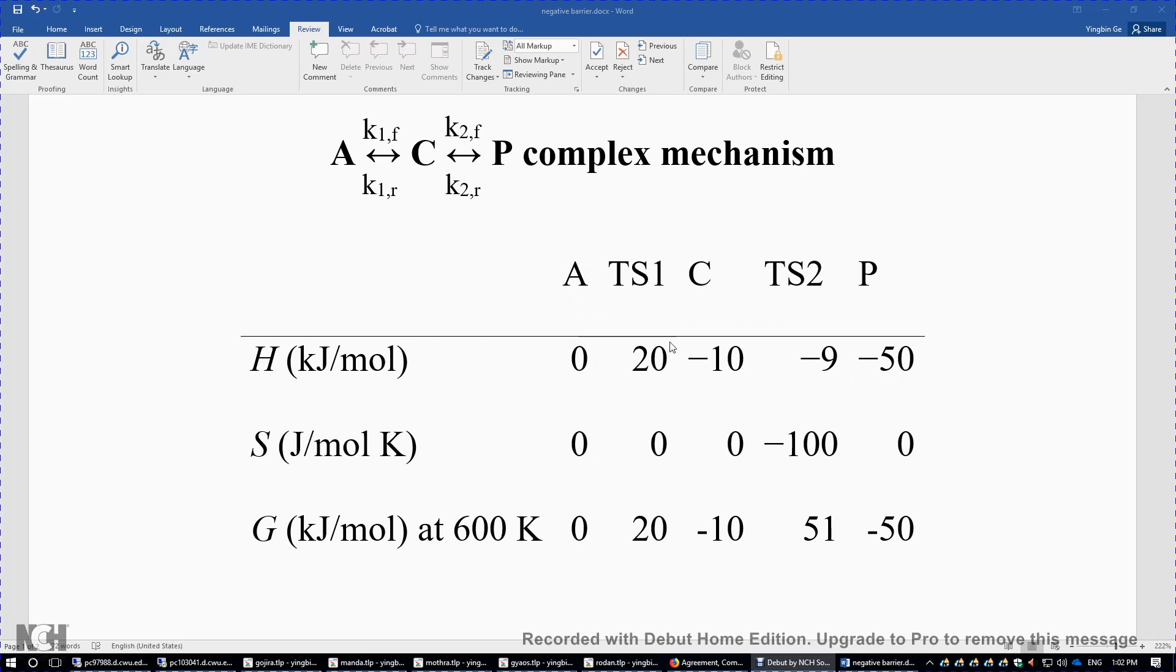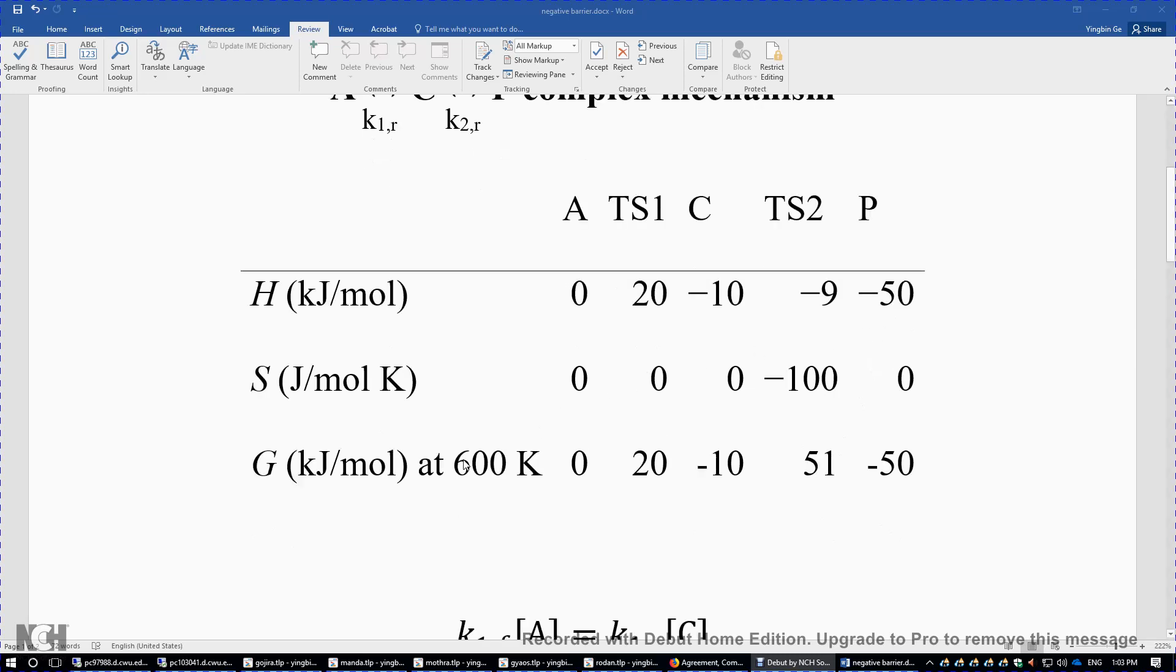Let's say entropy of A is 0. Again, I arbitrarily choose A as the zero reference. Let's suppose the relative entropy of TS1 is 0, C is 0, TS2 is -100, P is 0. Then we can easily compute the Gibbs energy of every species given a temperature, let's say 600 Kelvin degrees. We have the Gibbs energy of every single species in kilojoules per mole by using G equals H minus TS.